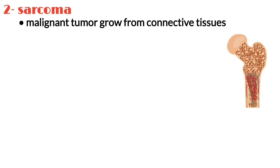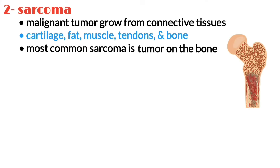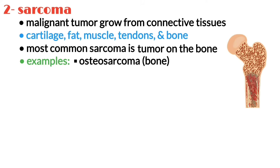Number two is sarcoma. A sarcoma is a malignant tumor growing from connective tissues such as cartilage, fat, muscles, tendons, and bones. The most common sarcoma, a tumor on the bone, usually occurs in young adults. Examples of sarcoma include osteosarcoma and chondrosarcoma.